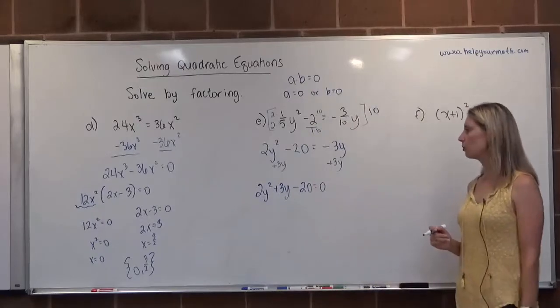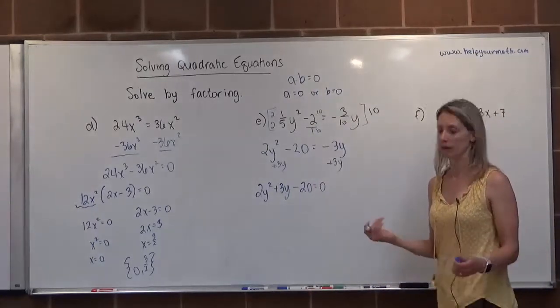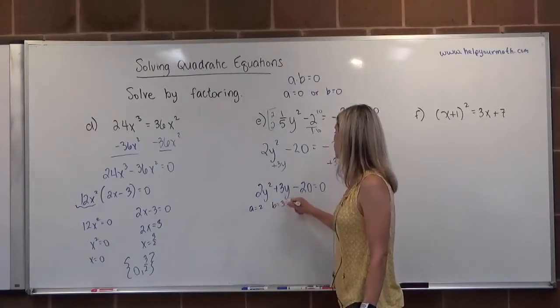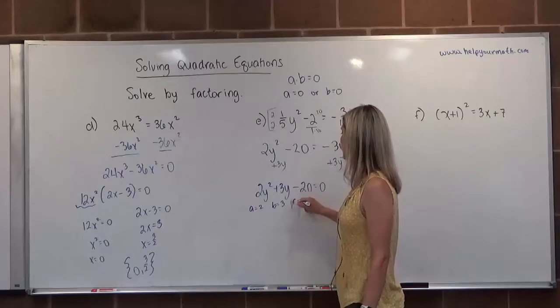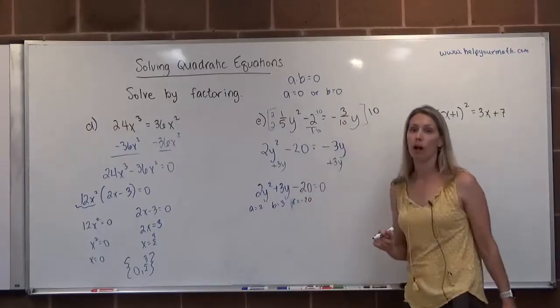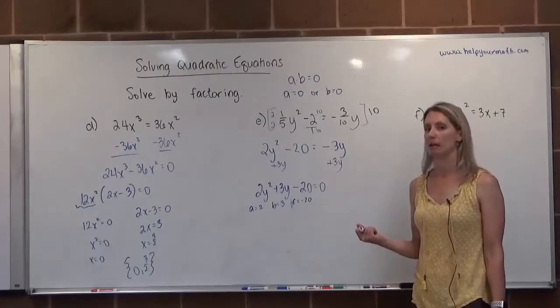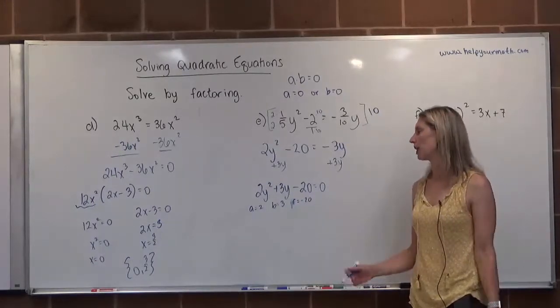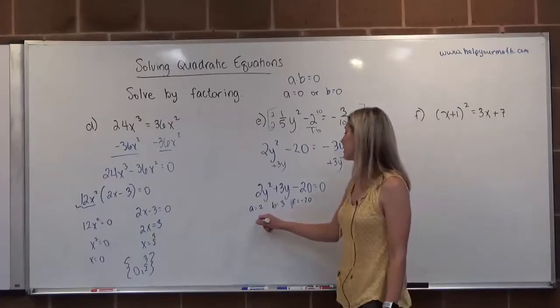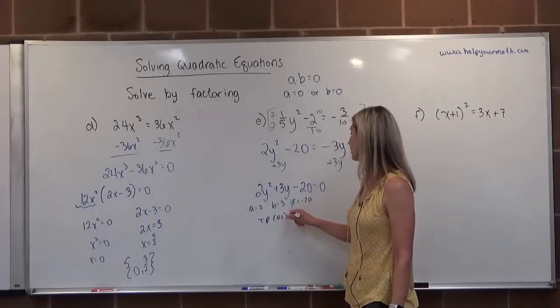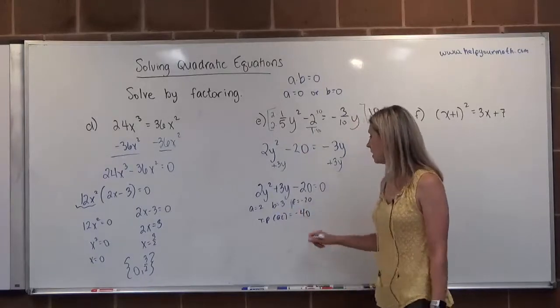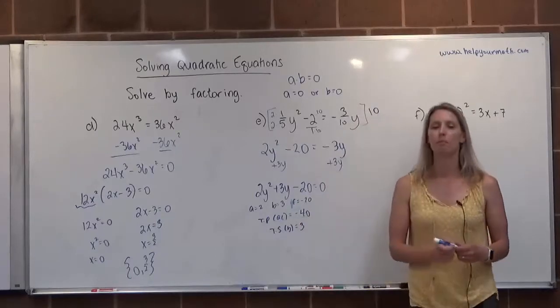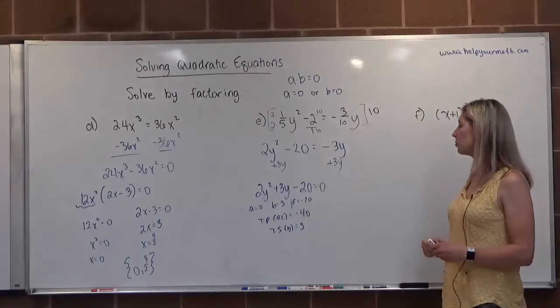From here, 2y squared, 3y, and 20 have a GCF of 1. Because this is a trinomial and the leading coefficient is not equal to 1, I want to use my target product target sum method. It's just your average ordinary trinomial. The target product would be a times c, which would be negative 40, and the target sum, which is b, is 3.